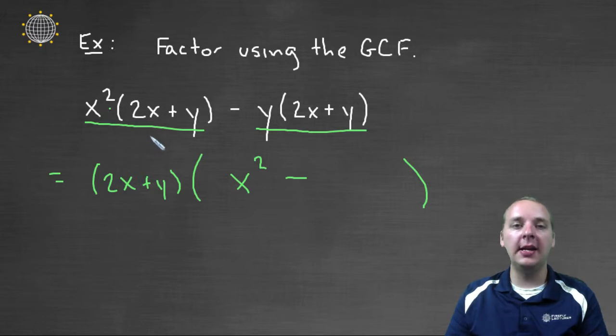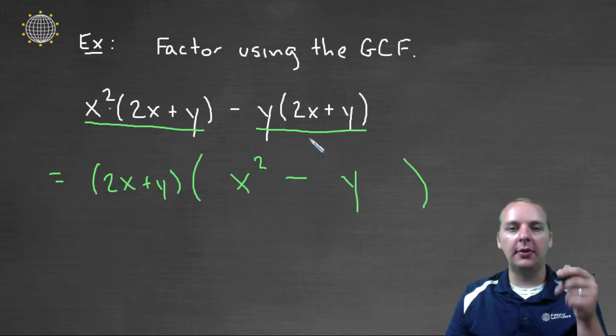The x squared is the term that's remaining once we pull out the 2x plus y here. And for the second term, the y would be left after we pull out the 2x plus y.